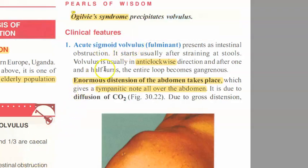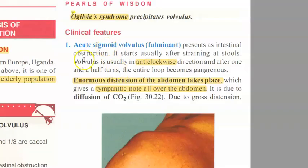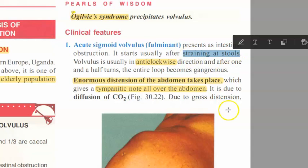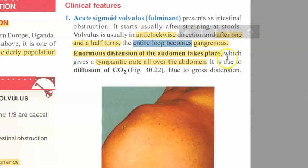Now let's look at the clinical features of sigmoid volvulus. A male will present with a distended abdomen and pain. It could also be a pregnant female. Acute sigmoid volvulus presents as intestinal obstruction and usually starts after straining at stool. The volvulus is usually anti-clockwise in direction, and after one and a half turns the entire loop becomes gangrenous.